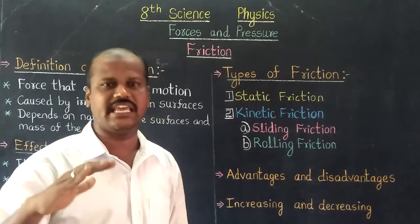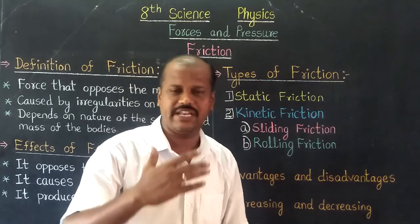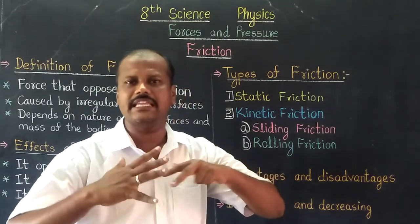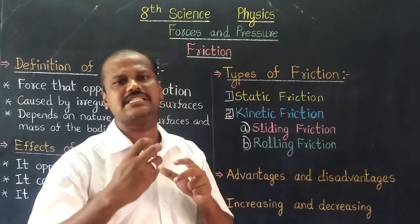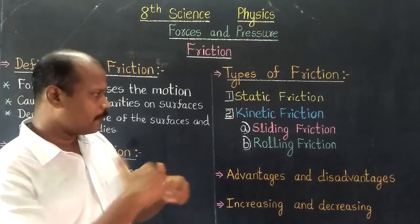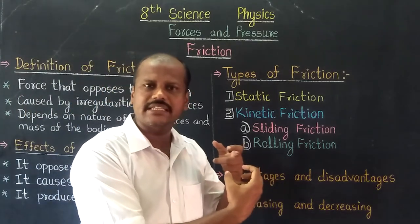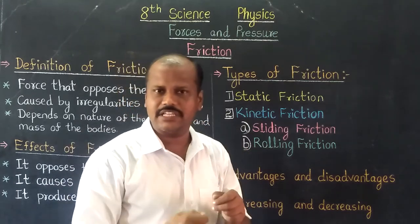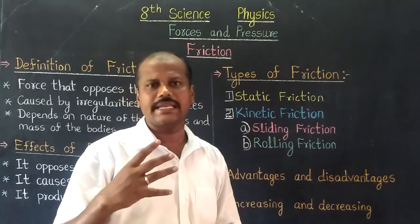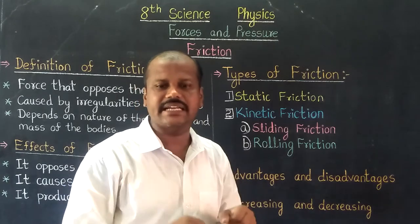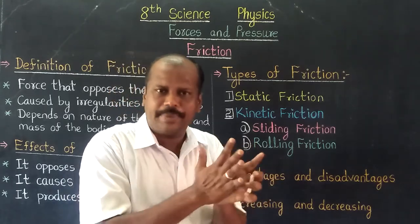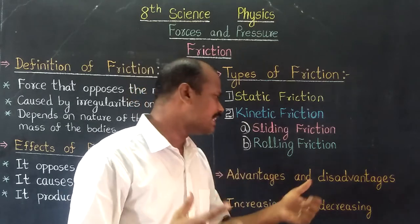The friction is necessary — it is a necessary evil. So friction has advantages and disadvantages. Disadvantages: the heat produced causes machines to be damaged. The excess effort is wasted. Energy is wasted due to friction. So this friction has disadvantages.